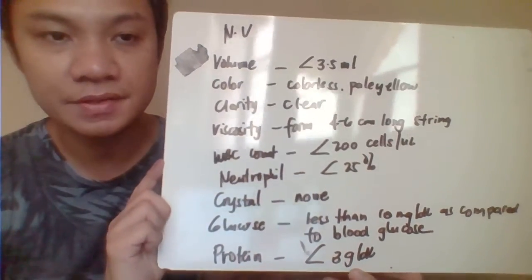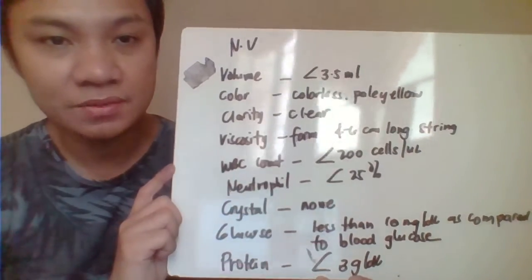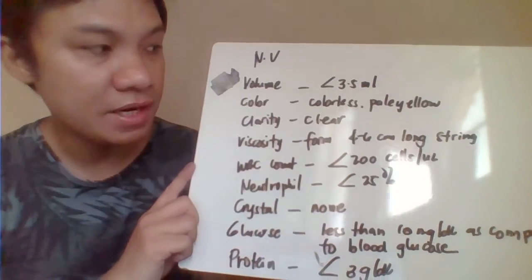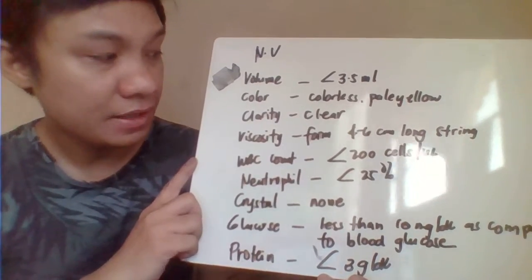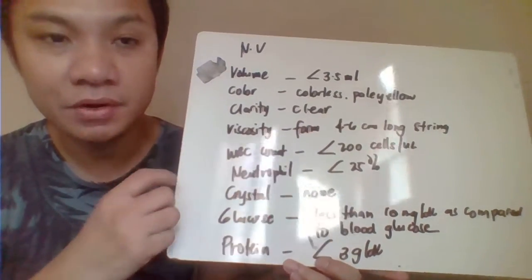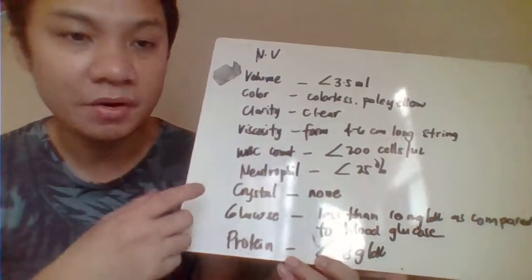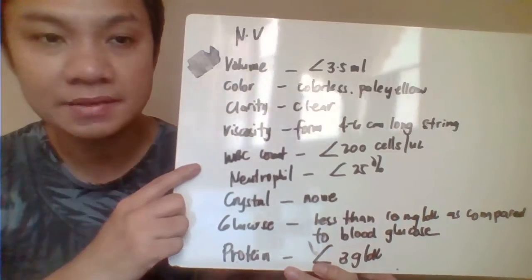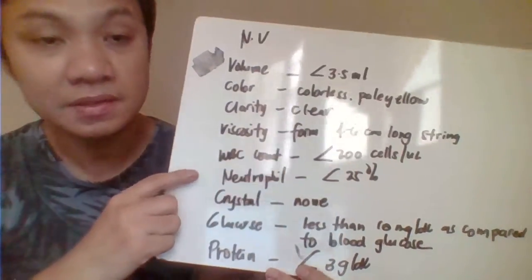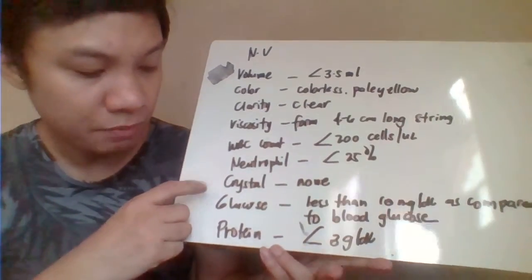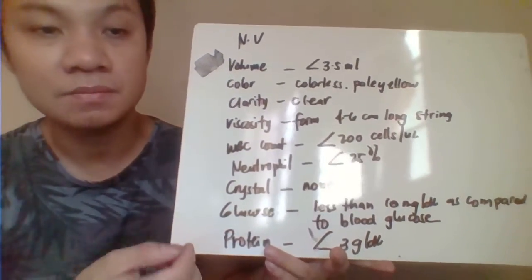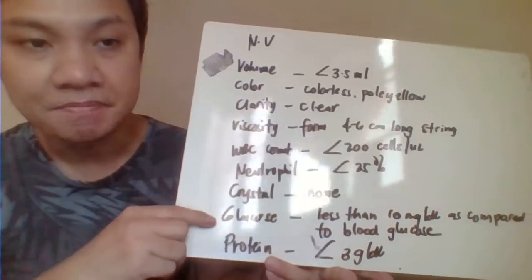Now we have the normal values for synovial fluid. Volume should be less than 3.5 mL. Color: normal is pale to colorless. Clarity is clear. Viscosity: it should be able to form a string approximately 4 to 6 cm before it breaks. WBC count should be less than 200 cells per microliter. Neutrophils: less than 25%. Crystals should not be present unless you have crystal-induced arthritis. Glucose level should be less than 10 mg/dL compared to your blood — so you need blood glucose as your reference. Protein should be less than 3 grams per dL.